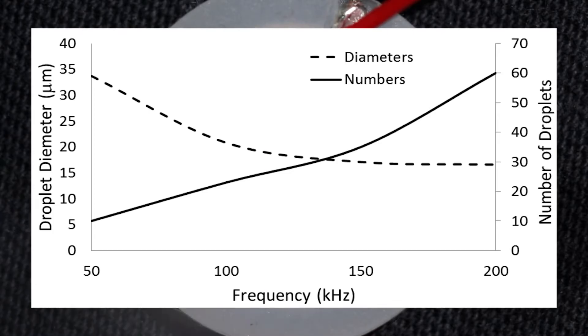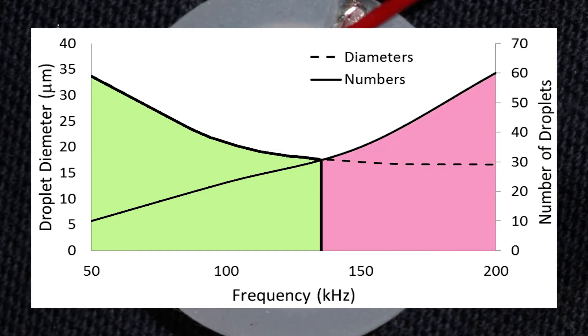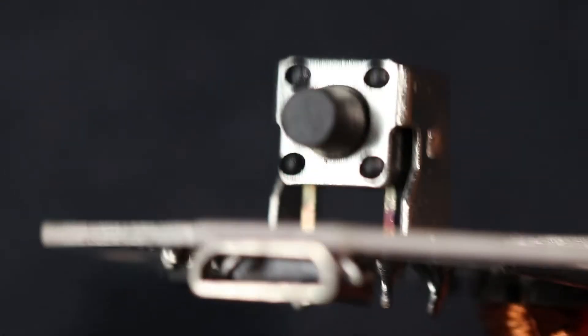Lower frequency leads to bigger droplets, but the number of them is also lower. And higher frequencies to smaller droplets, but more of them.